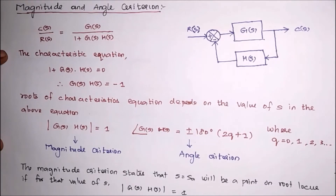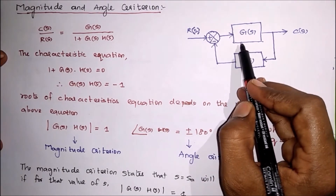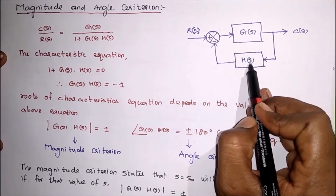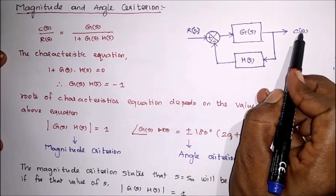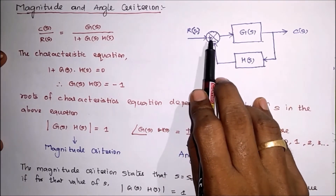In this video, we are going to see about magnitude and angle criterion for a closed-loop system. This is a closed-loop system. G(S) is the system gain, H(S) is the feedback gain, C(S) is the output, and R(S) is the input.